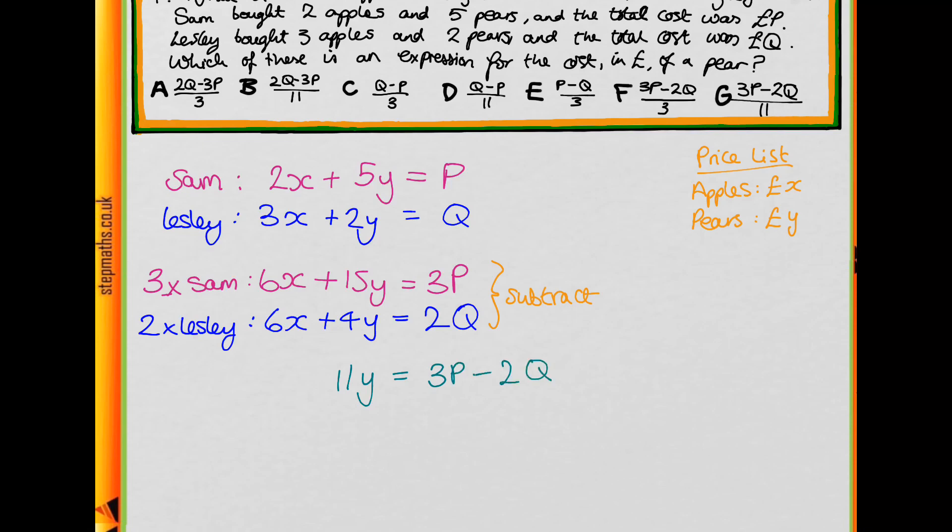And so straight away we can see that if we divide by 11, we get that Y is 3P minus 2Q over 11, and this gives us answer G.